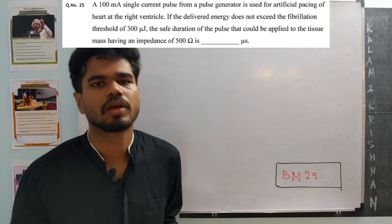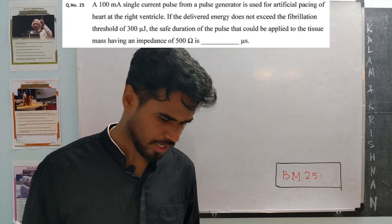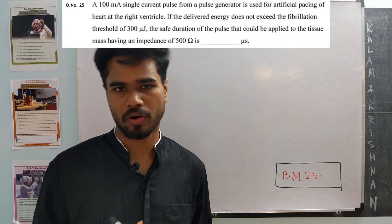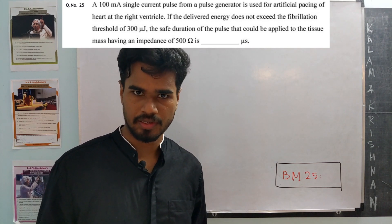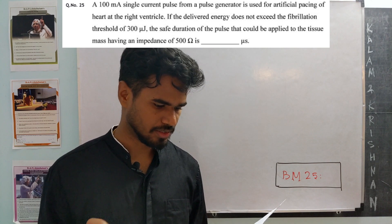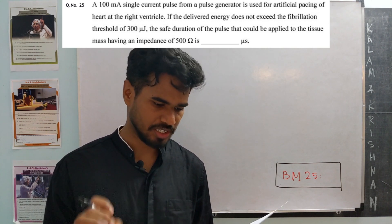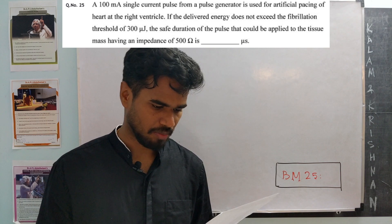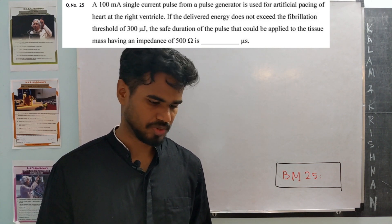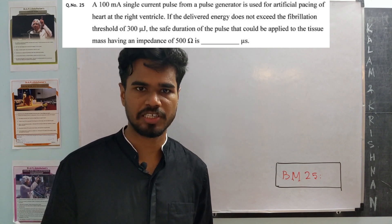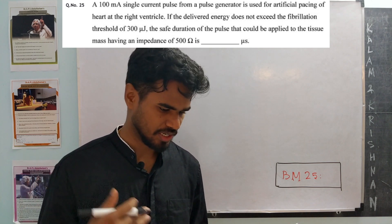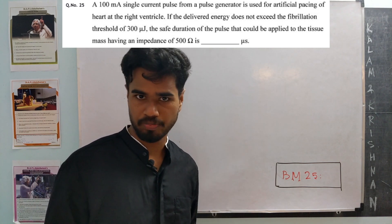The question might look threatening because of the artificial pacing, fibrillation threshold terminology, but what they are saying is: we are sending an electric current through a resistor and there is a threshold on the maximum energy that could be applied to the resistor. So we just need to find the power dissipated and the energy delivered to the resistor.